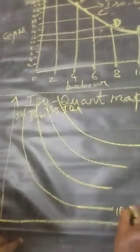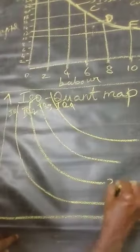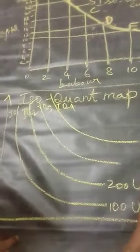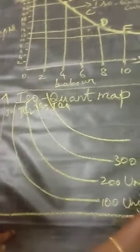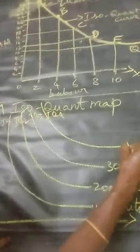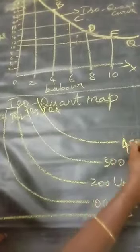100 units, 200 units, 300 units, 400 units.